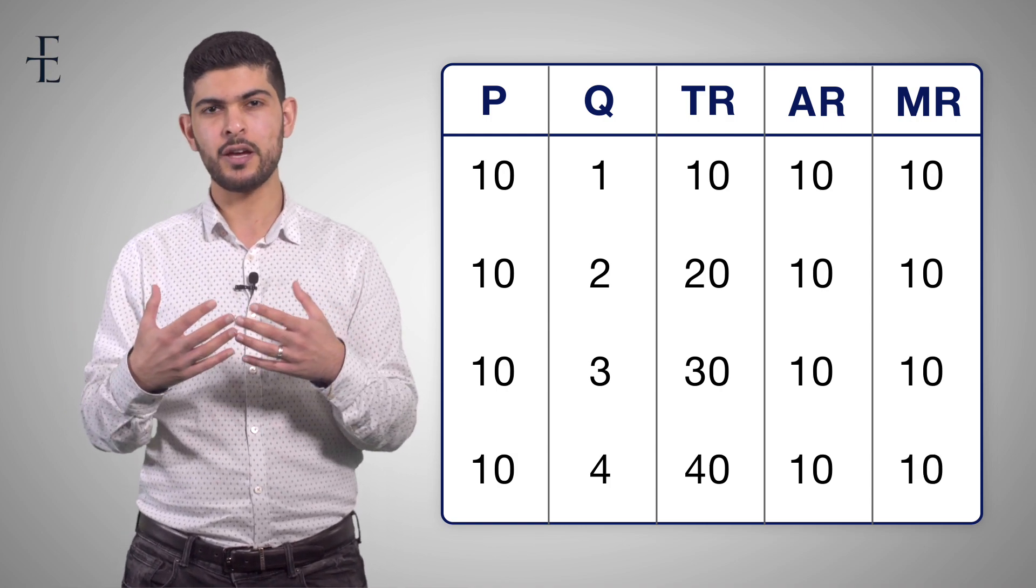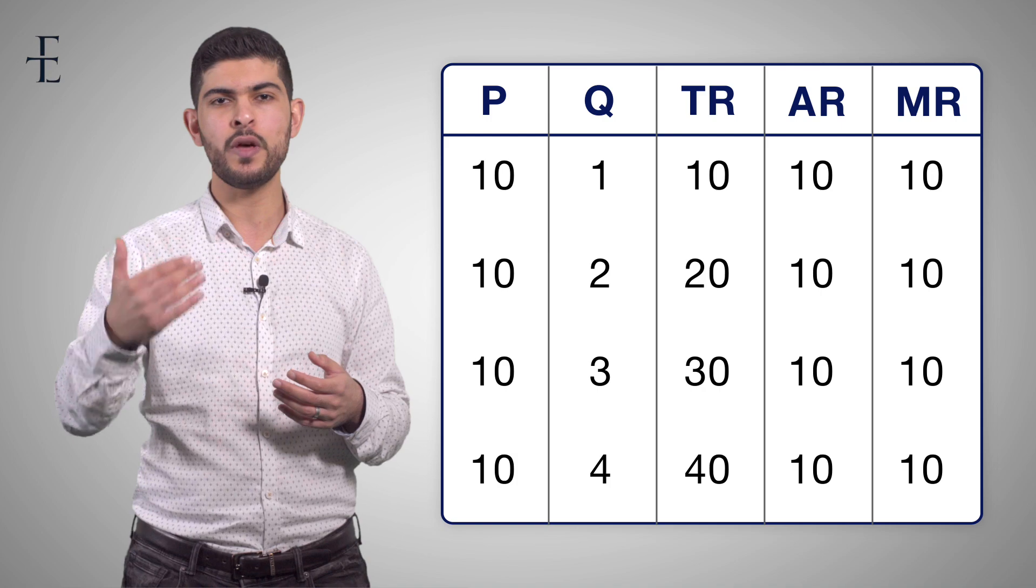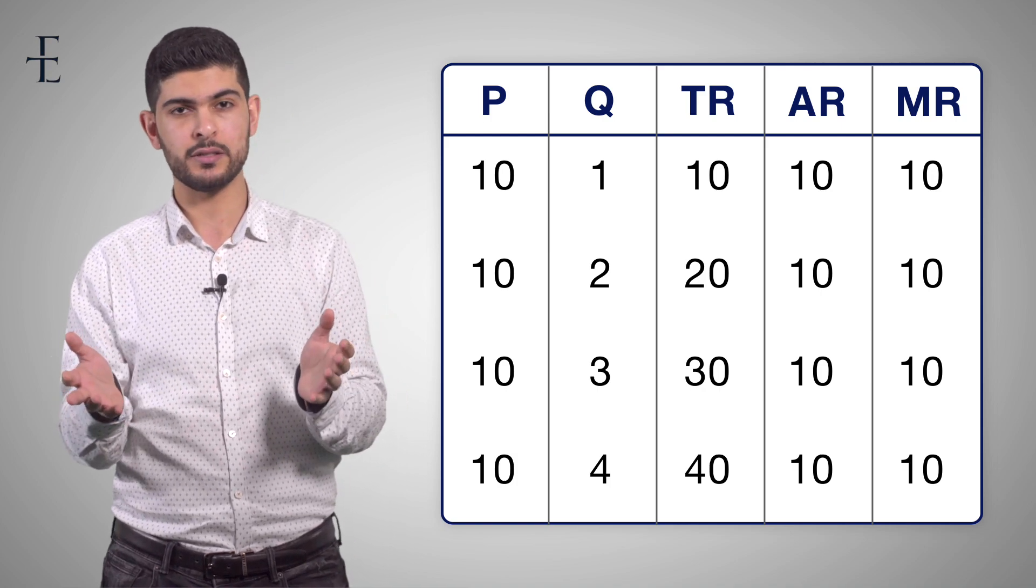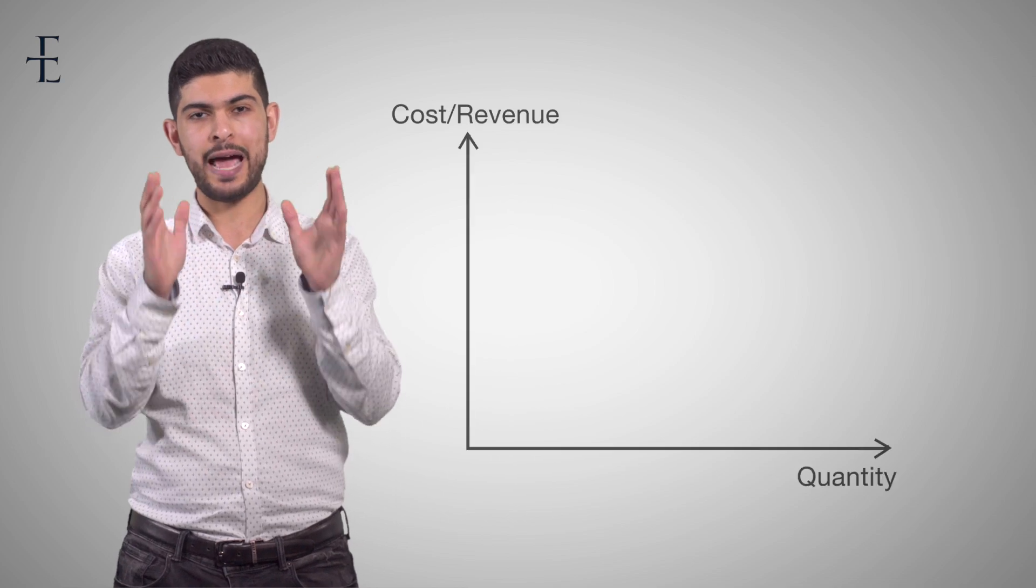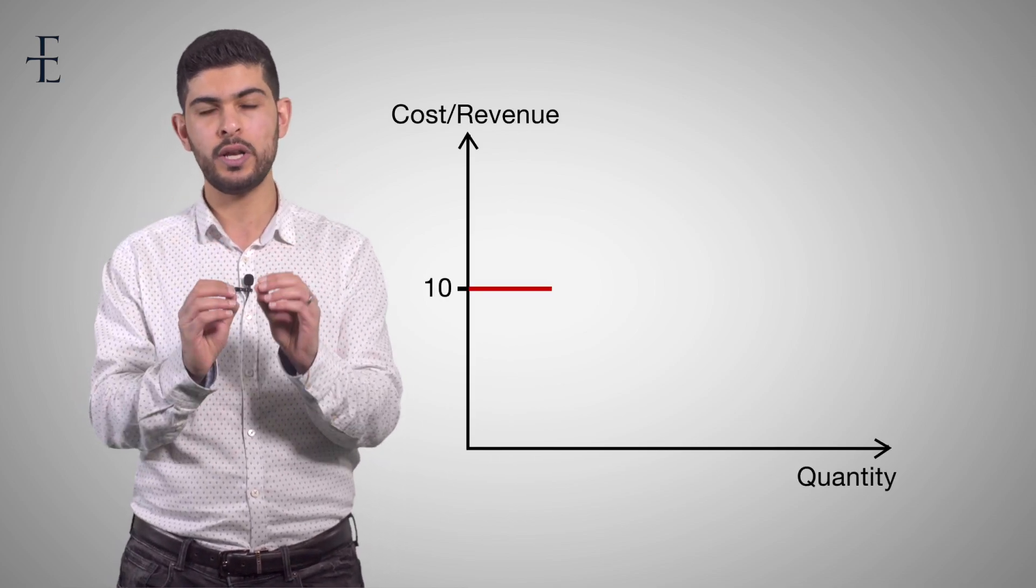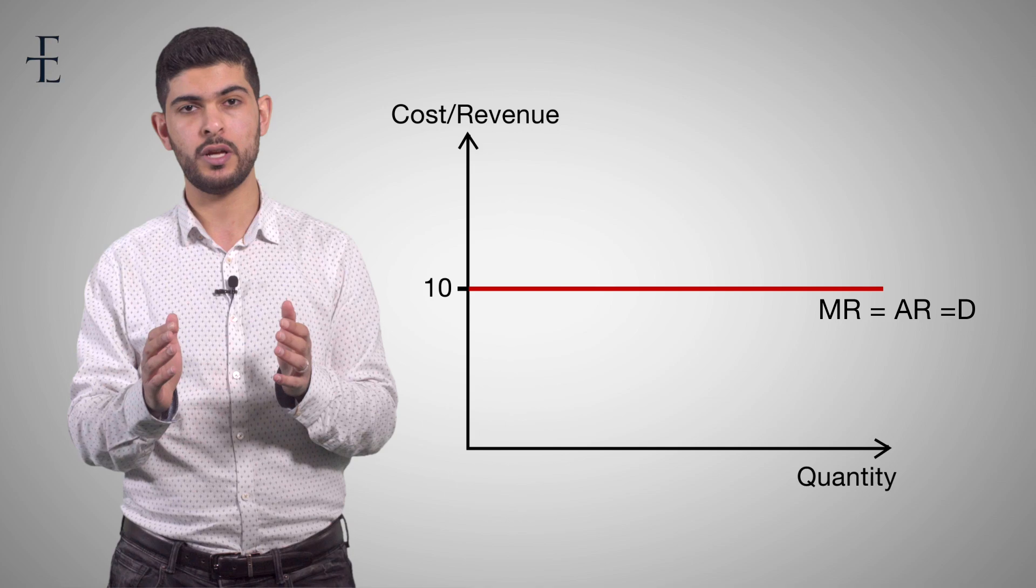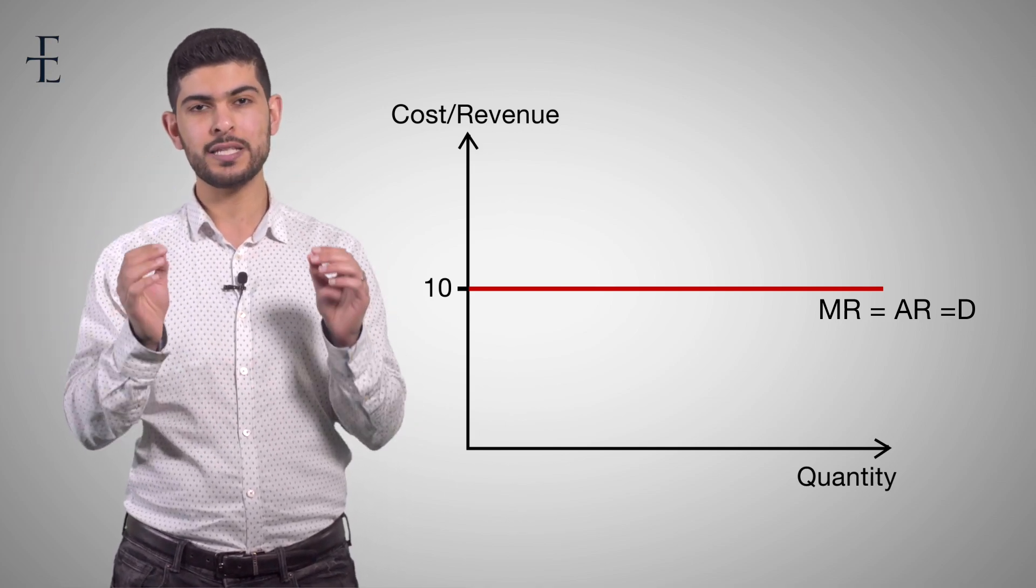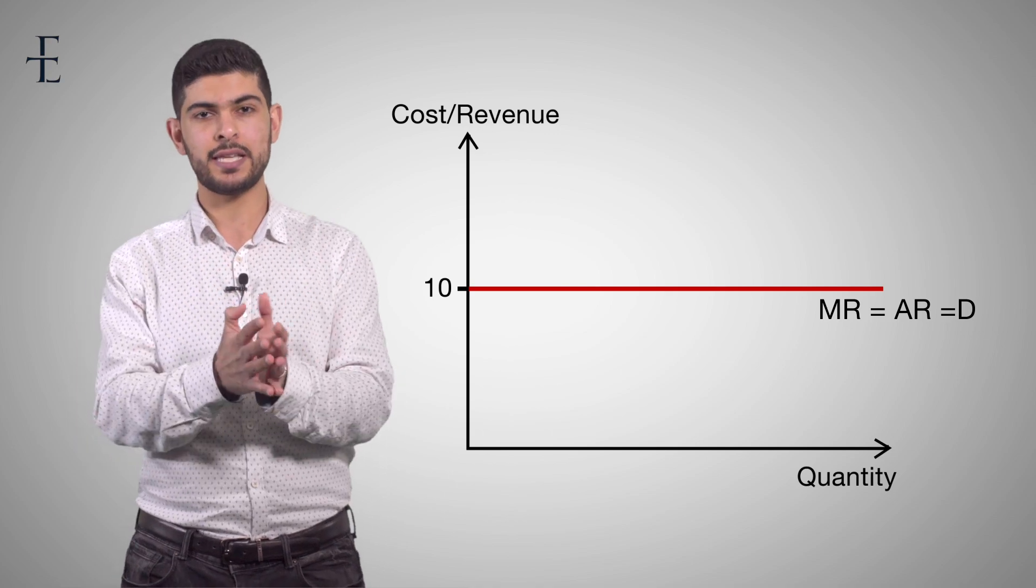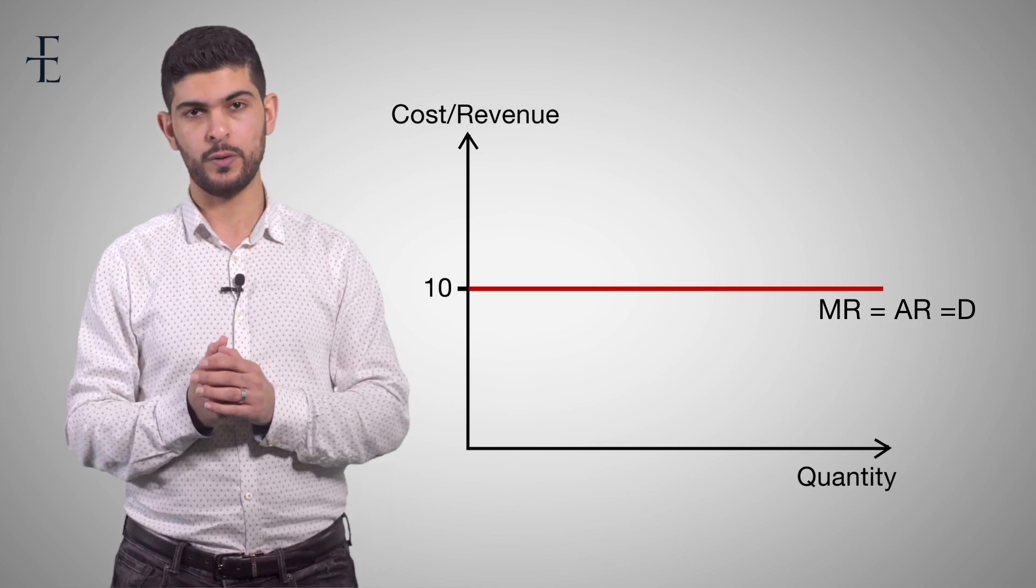Because if you're a price taker, you have to accept that every single unit that you sell is going to be £10. That is why marginal revenue and average revenue are equal to one another in perfect competition. That is why they are perfectly elastic. Because you as a price taker have to accept that that is what you sell your good for.